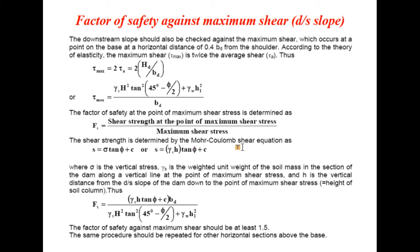The shear strength is determined by the Mohr-Coulomb shear equation: s equals sigma tan phi plus c, where sigma equals gamma-s times H, gamma-s is the weighted unit weight of the soil mass along the vertical line at the point of maximum shear stress, and H is the vertical distance from the downstream slope of the dam down to the point of maximum shear stress — that is, the height of the soil column.